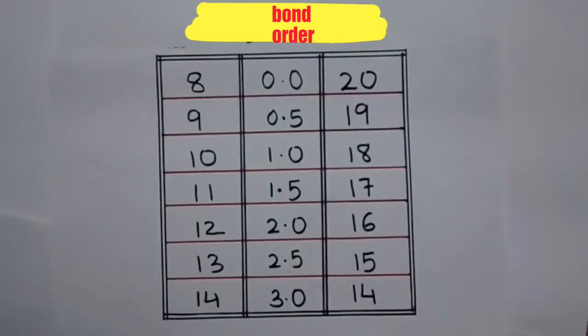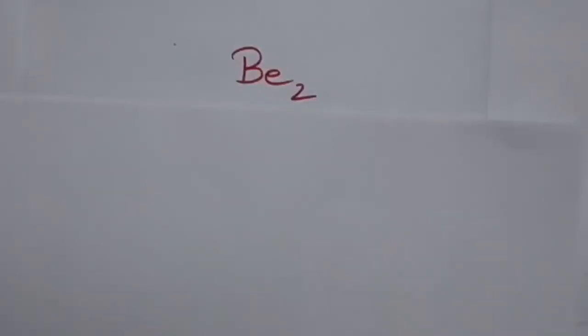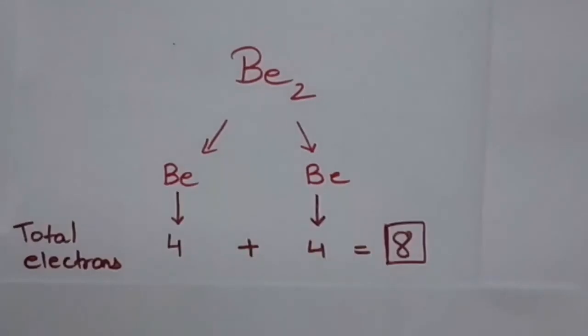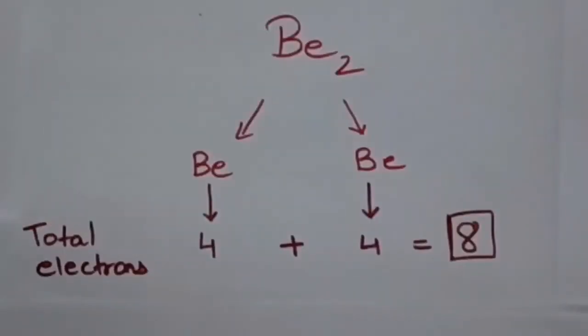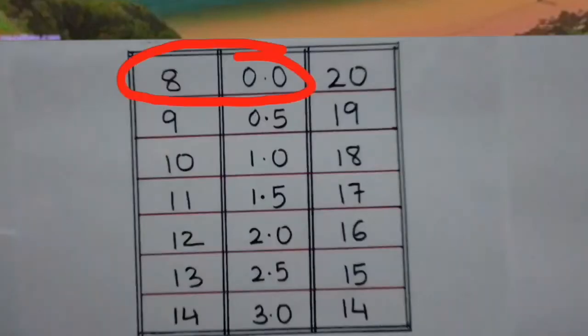Now, I will explain how to use the table. In the case of beryllium, we have two beryllium atoms. Each of these beryllium atoms contributes 4 electrons. So, total we get 8 electrons. From the table, we get the bond order for beryllium as 0.